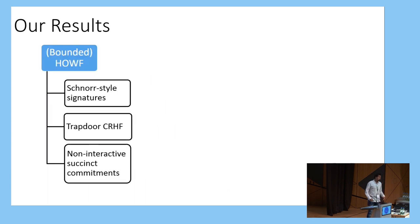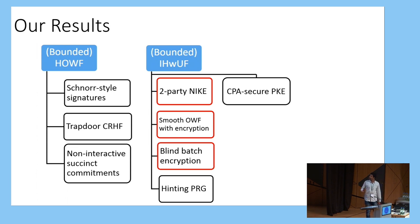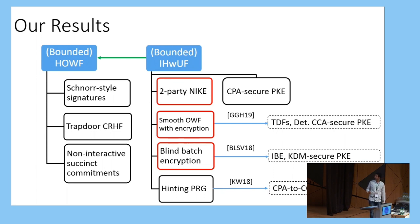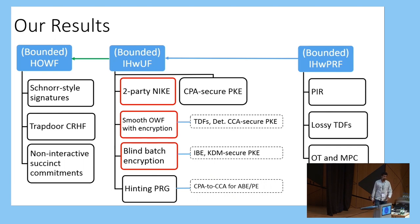With this background, our main results show that when these MiniCrypt primitives are endowed with additional structure, they end up implying very strong primitives typically considered part of cryptomania. This includes non-interactive succinct commitments, public key encryption, and primitives implying even stronger cryptographic primitives such as trapdoor functions, IBE, key-dependent message secure public key encryption, and generic conversions of CPA to CCA security for attribute-based and predicate encryption. We also show that an input-homomorphic weak unpredictable function implies a homomorphic one-way function when the underlying group is abelian. Strengthening unpredictability to pseudorandomness yields even more: private information retrieval, lossy trapdoor functions, oblivious transfer, and multiparty computation.